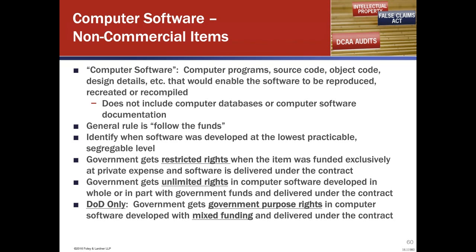For software you develop, you identify down to the lowest practicable, segregable level. The government gets restricted rights in computer software developed exclusively at private expense — basically synonymous with limited rights, but they call it restricted rights when it comes to computer software. And they get unlimited rights in computer software developed in whole or in part with government funds. With restricted rights relating to software, it basically can't be used, reproduced, or disclosed by the government, except under a lot of restrictions.